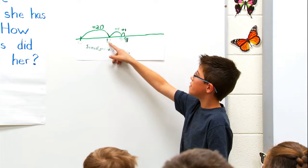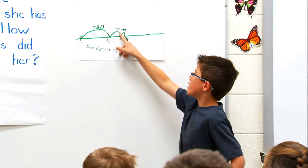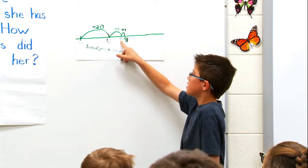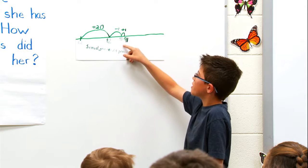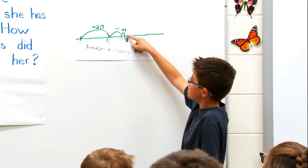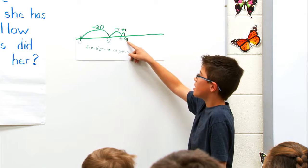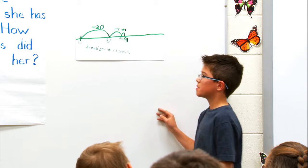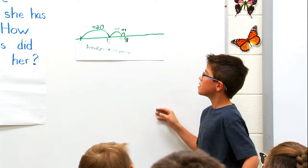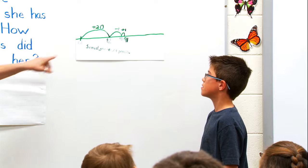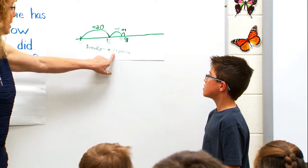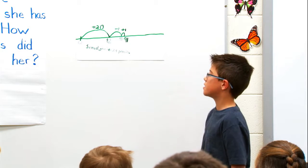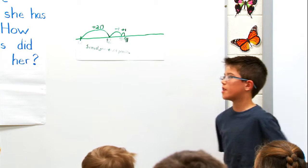I started at 62, then added 20 to get to 82, then added 8 to get to 90 — the benchmark — and then added 1 to get to 91. Samuel gave her 29 pencils. How did you know it was 29? Because I added 28 and 1 to get 29.